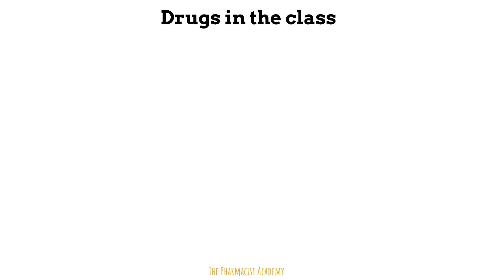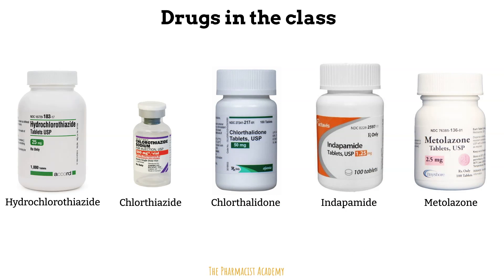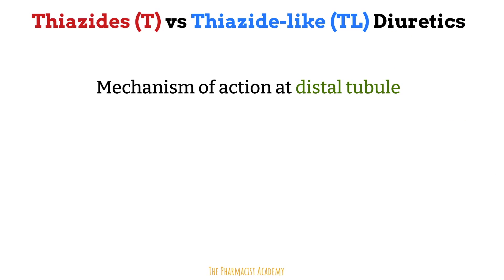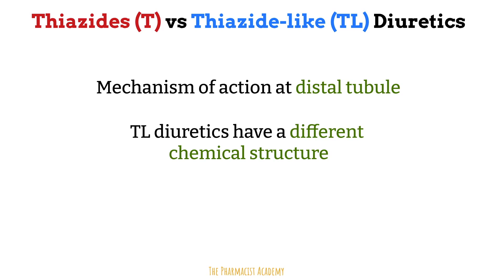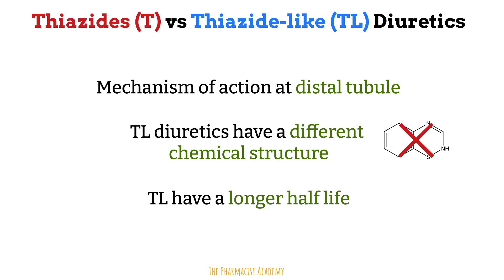If you search for drugs in this class, you may see names like hydrochlorothiazide, chlorothiazide, chlorthalidone, indapamide, and metolazone. Hydrochlorothiazide and chlorothiazide both end with 'thiazide,' but the other agents do not — these are called thiazide-like diuretics. The term thiazide essentially refers to diuretics that primarily work at the distal tubule. Thiazide-like diuretics are not chemically structured like traditional thiazides, but they still work at the distal tubule. They lack the benzothiazine ring structure seen in traditional thiazides. Thiazide-like diuretics also have a longer half-life, so they are dosed less frequently and are able to achieve effective blood pressure reduction, especially during the night.